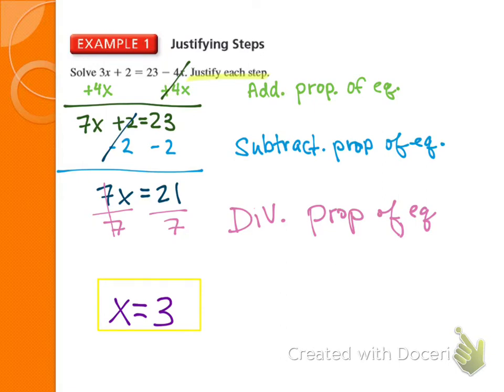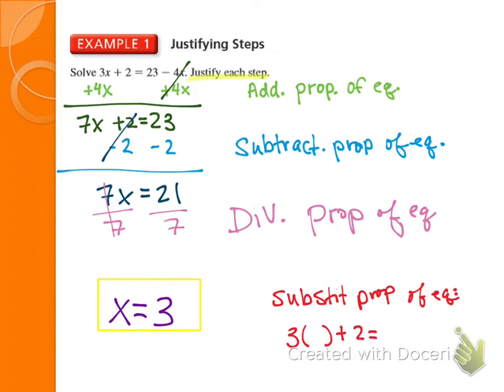You don't normally write substitution unless asked. The substitution property looks like taking the equation — 3 times (x plus 2) equals 23 minus 4 times x — and plugging in 3 for x to verify both sides equal. That is the substitution property of equality; you don't normally have to write it — I'm just showing you an example.